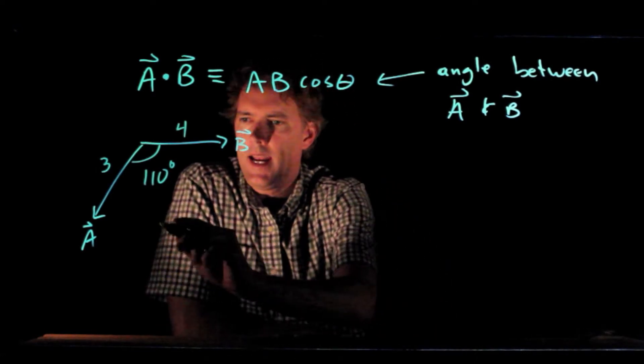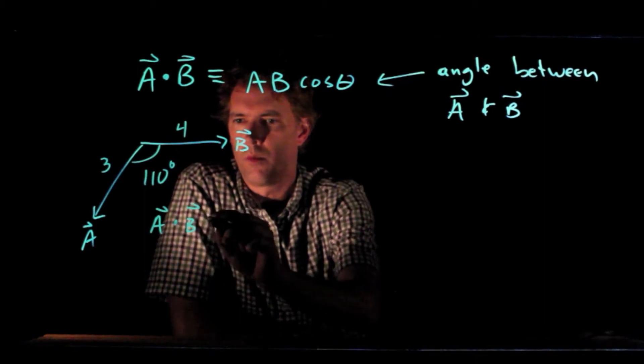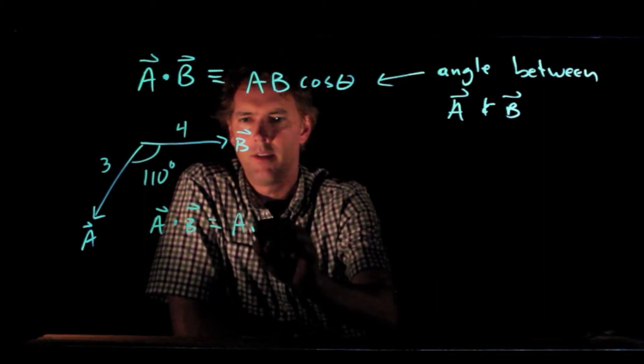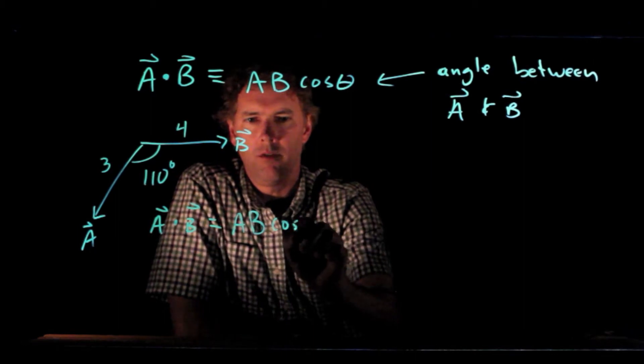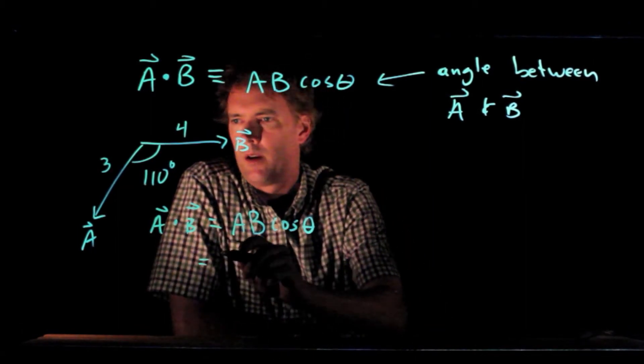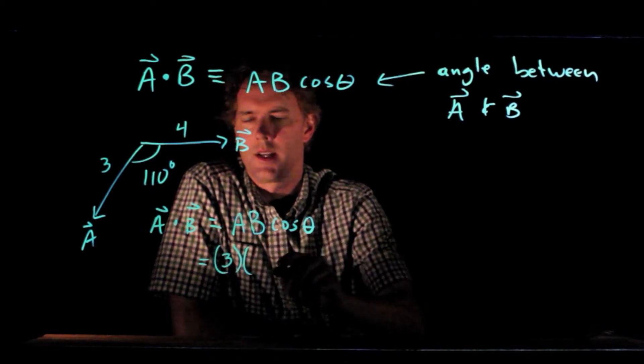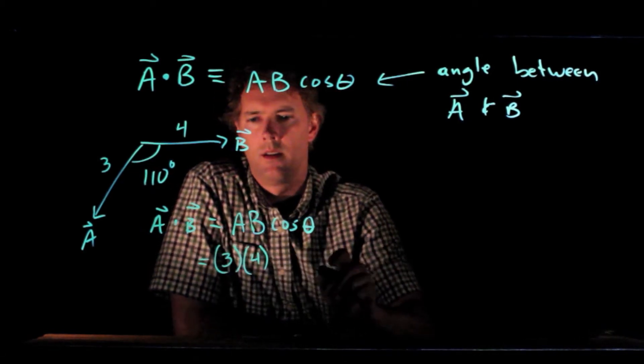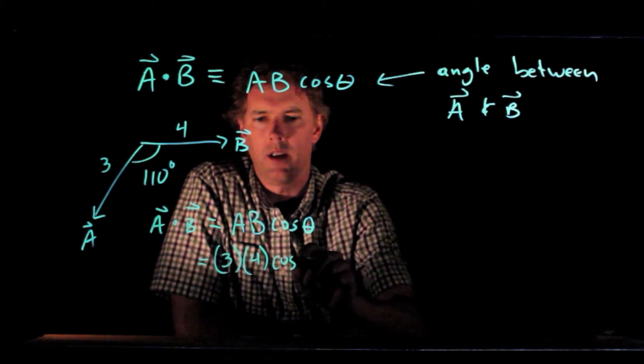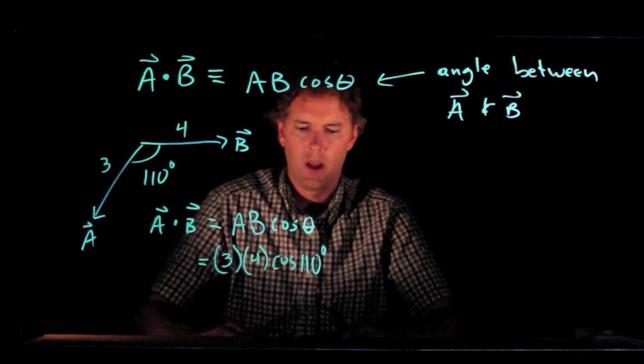So A dot B is going to be what? Well, it's magnitude of A times magnitude of B times the cosine of theta, which in this case is 3 times 4 times the cosine of the angle between them, 110 degrees.